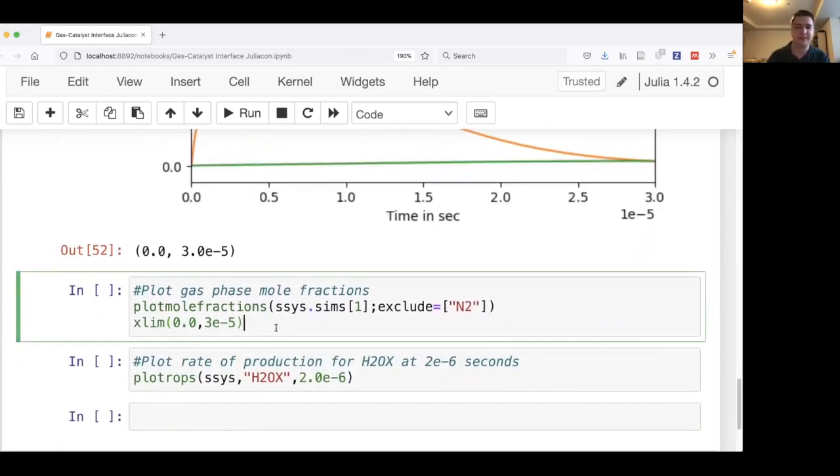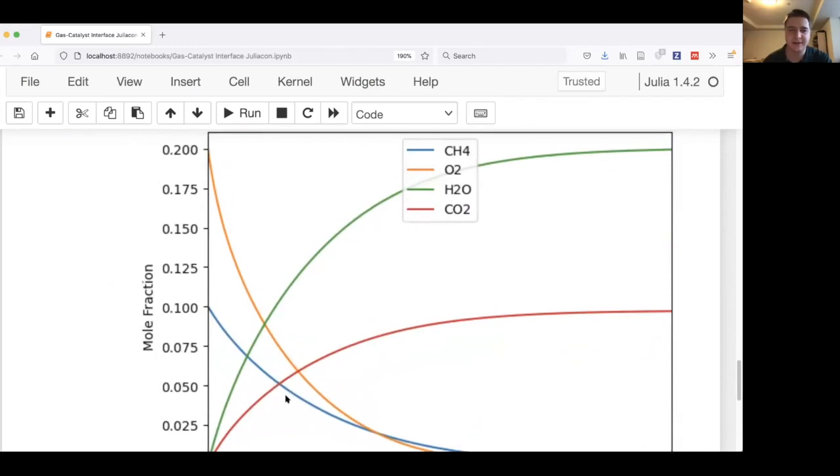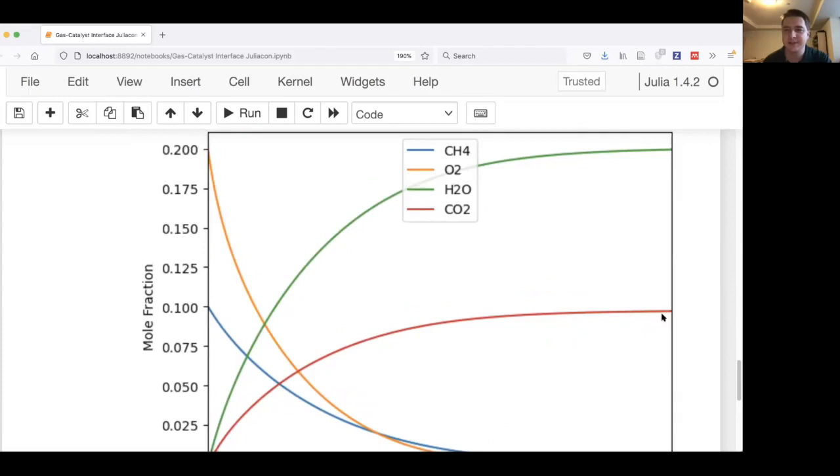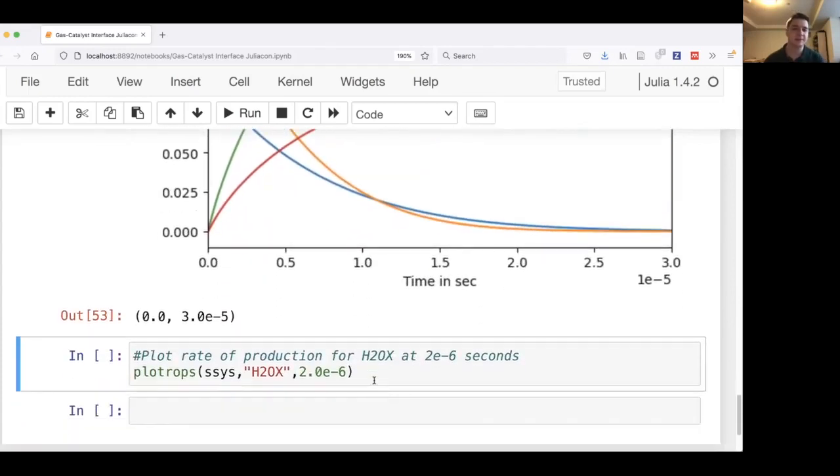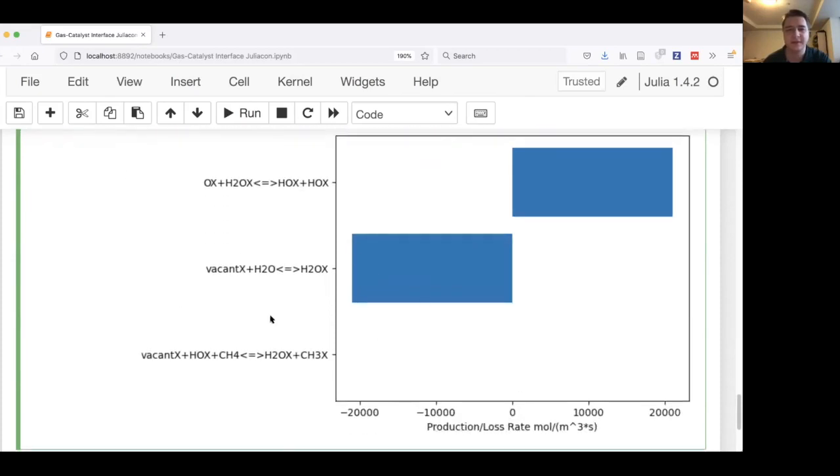As you can see here, the surface starts vacant, then it gets filled with oxygen, and then as the reaction progresses, as the oxygen reacts away, it gets more vacant, but it doesn't get quite vacant because there's still some CO2 on the surface. We can do the same thing for the gas-phase mole fractions. You can see the methane and oxygen reacting away on the surface to make H2O and CO2. We can also look specifically at rates of production for different species at specific times. What this tells us essentially is that at this time, absorbed H2O is mostly being produced by this reaction between OH absorbed to the surface, and then the primary loss for this is H2O desorbing into the gas phase.